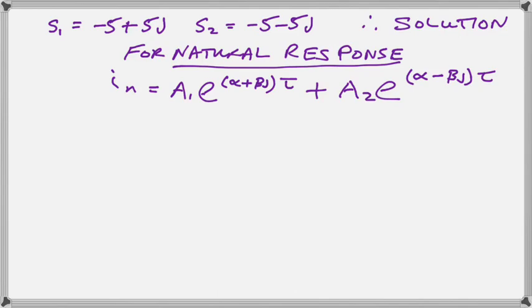That is the response that we will get for our natural response for the current. Now by using Euler's relation and rearranging, we end up with this form of it, which is probably more familiar to you. But we still have our alpha and our beta, which relate to our complex numbers that we just finished calculating.